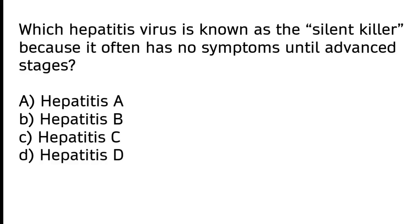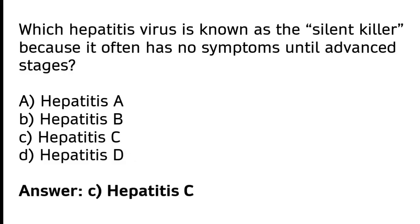Which hepatitis virus is known as the silent killer because it often has no symptoms until advanced stages? A) Hepatitis A, B) Hepatitis B, C) Hepatitis C, D) Hepatitis D. The correct answer is option C — hepatitis C virus is known as the silent killer because it often has no symptoms until advanced stages.